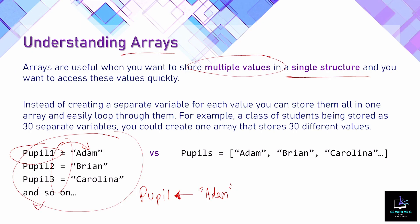So 30 variables would be doable, but things could start to get messy and the program wouldn't flow as efficiently as if we used an array. Here is an array called 'pupils' — rather than having pupil one, two, three and so on, we just call it 'pupils' and it contains a list of items. The easiest way to spot an array is that it uses square brackets, both in pseudocode and most high-level languages. It contains a list of items — one, two, three — and this would carry on for all 30 pupils, stored inside one structure.